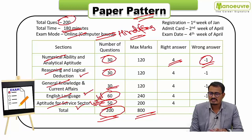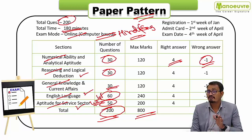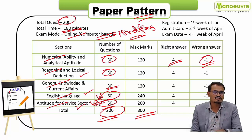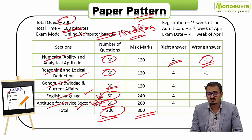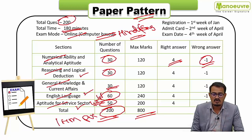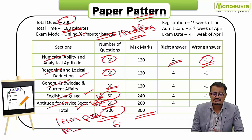What should be the exact score out of 800 to enter the top institutes? If you are targeting IHM Pusa or IHM Mumbai, you should score 630 to 650 marks out of 800.